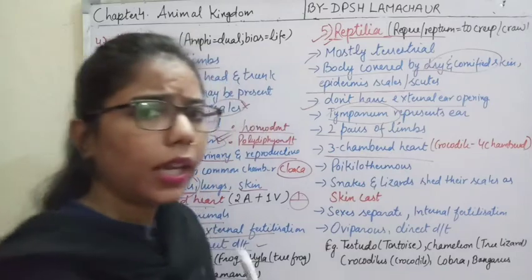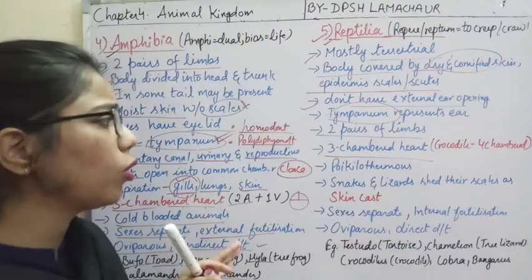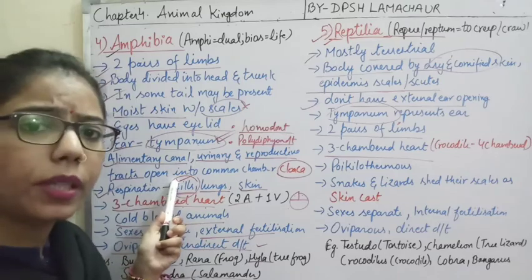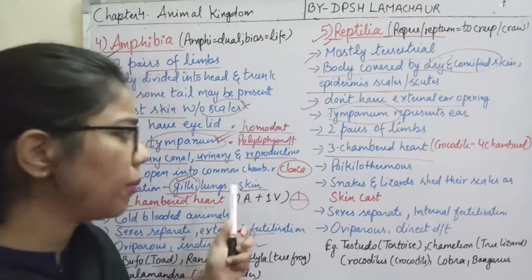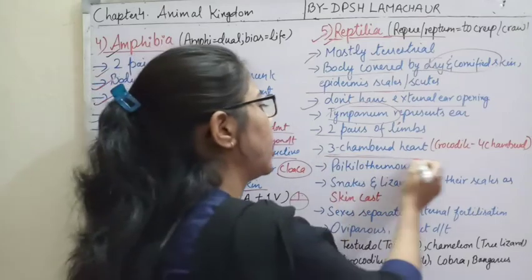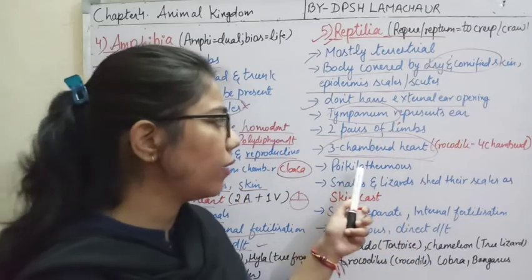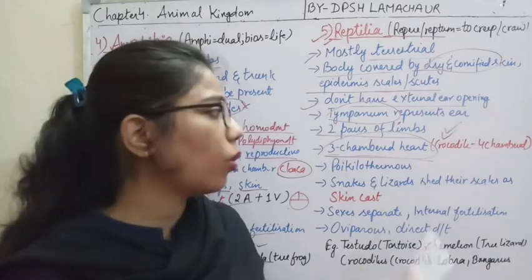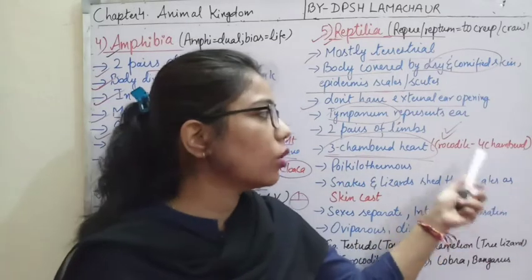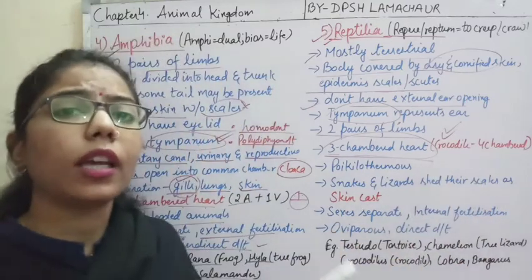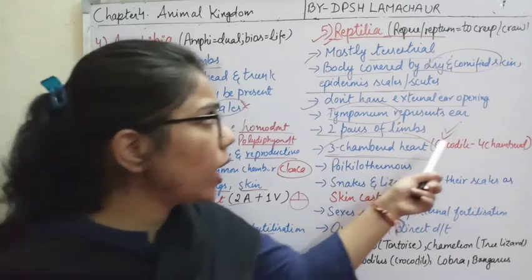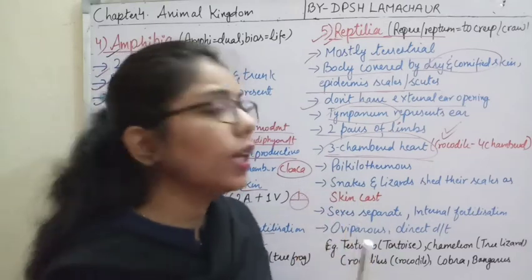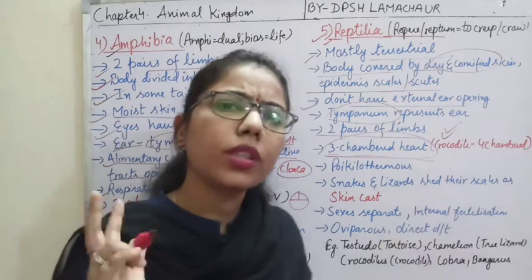As we move towards higher animals, the number of heart chambers increases. Fishes had two-chambered hearts, amphibians had three-chambered. Reptilia also have a three-chambered heart. However, the exception is Crocodile, which has a four-chambered heart — an important MCQ point. They are also cold-blooded poikilothermous animals like the previous classes.